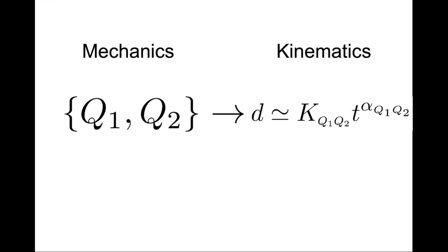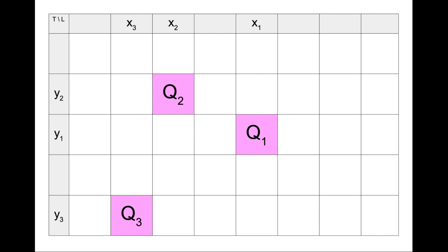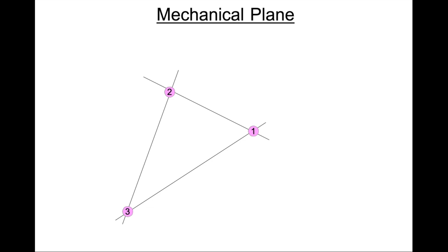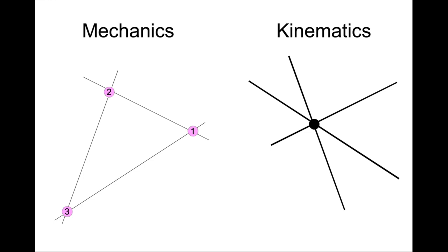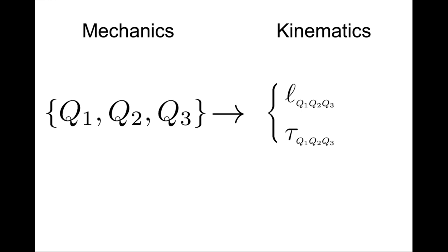Once we know the mechanical parameters we can quickly derive how k and alpha depend on it. This connection between pairs of mechanical quantities and power laws is the building block of the relationship between mechanics and kinematics. In the last episode we took an important step and introduced a third mechanical quantity. We've not yet talked about the case where the three quantities are aligned along a horizontal, a vertical, or a diagonal — we are saving it for later.